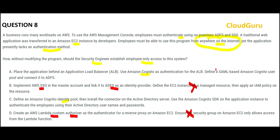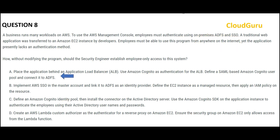Now between option A and option C — which is the correct one? If you want to provide employee-only access, remember it is not about end users or customers buying something on Amazon.com. It is only for the employees. Whenever we are using Cognito, always think about SAML-based authentication in terms of providing SSO. SAML is the protocol we should use. Option C tells you to define a Cognito identity pool, install a connector on AD servers, and use SDK to authenticate using Active Directory username and passwords. Option A has better suitability because it uses SAML. So option A is my final answer.